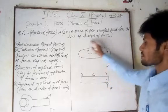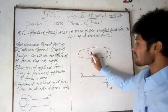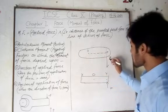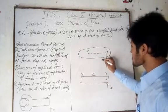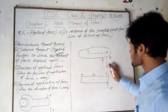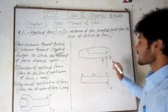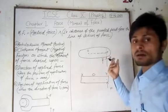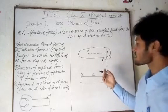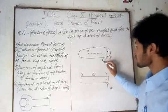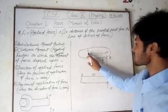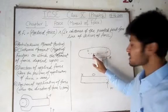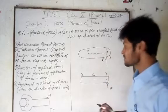If this is a pivoted object, pivoted at the point O, and F is the applied force at point A, then the moment of force is equal to force F into distance OP, which is the perpendicular distance from the line of action of force.